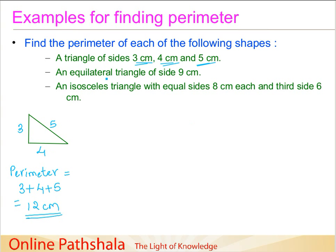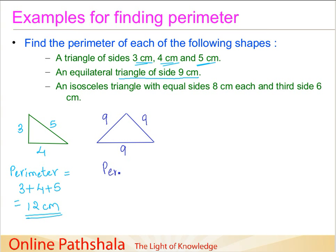The second example asks for the perimeter of an equilateral triangle with side 9 centimeters. An equilateral triangle simply means all three sides are the same length. Drawing the equilateral triangle and labeling all sides as 9 cm. Since an equilateral triangle is a regular shape, the perimeter equals the number of sides times the side length: 3 times 9, which gives 27 centimeters.